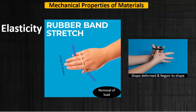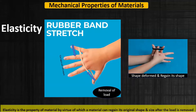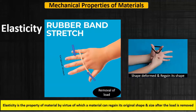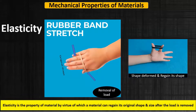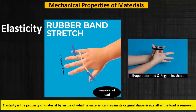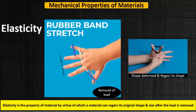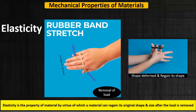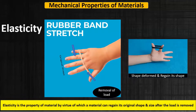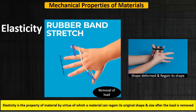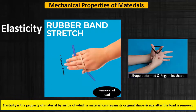So what is elasticity? Elasticity is a property of material by virtue of which a material can regain its original shape and size after the load is removed.